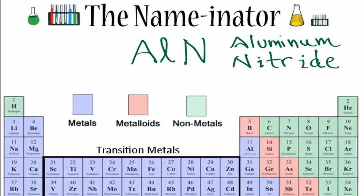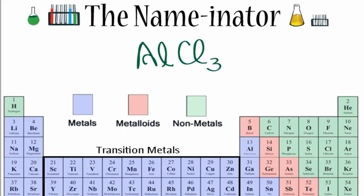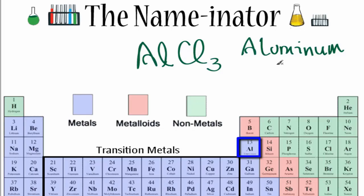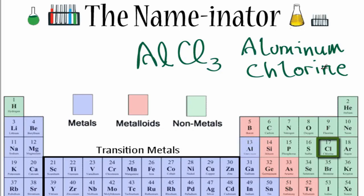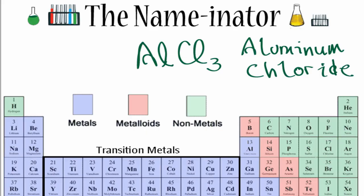Let's do one more. For AlCl3, we look up Al — we already know that's aluminum. Then we write the name for Cl, but we get rid of that I-N-E and write I-D-E. And we end up with aluminum chloride.